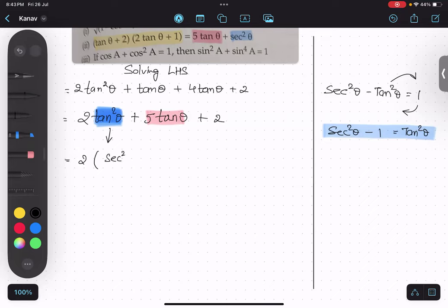Two, second everyone: sec² θ minus 1 plus 5 tan θ plus 2. Make sense? I'll just open the bracket.